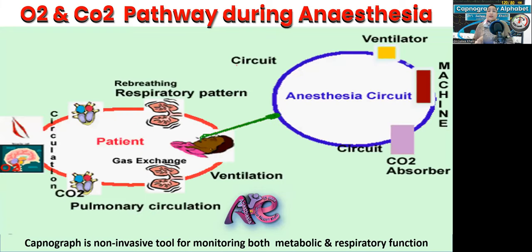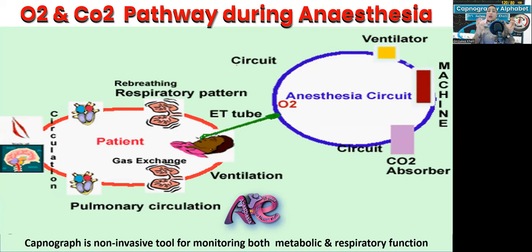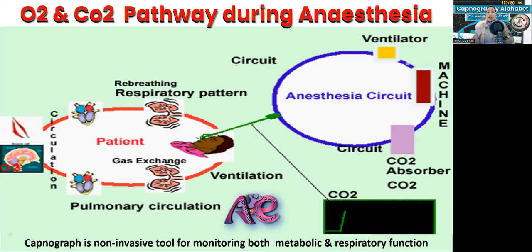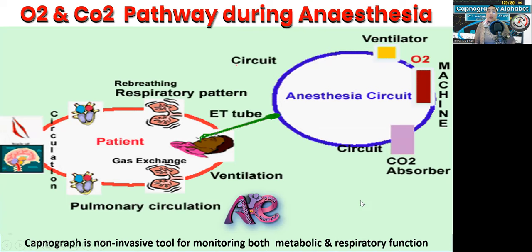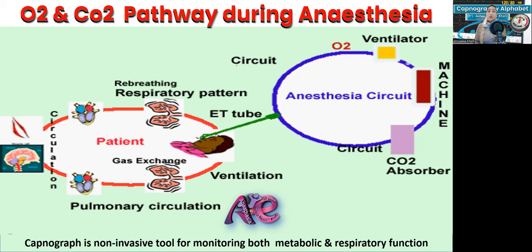During anesthesia, there is an interaction between two major components: the anesthesia machine (ventilator and circuit) and the patient. The critical connection is the endotracheal tube, supraglottic airway device, or face mask — and CO2 is typically measured at this critical point. The ventilator gives oxygen to the patient; oxygen is transported to the blood and tissues. In the tissue, CO2 is produced by metabolism, transported by circulation to the lung, and exchanged by ventilation.